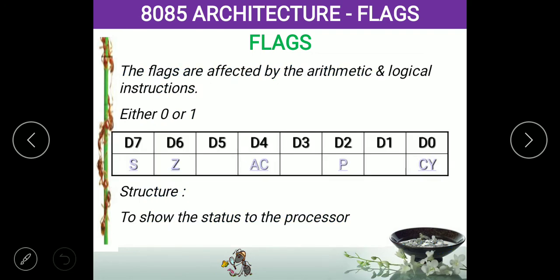The flag register is an 8-bit register — in maximum it can show the status of 8 activities. The status is mainly for the processor, and the processor knows what's happening based on the flag status. The flags in the 8085 are: S (sign flag), Z (zero flag), AC (auxiliary carry flag), P (parity flag), and CY (carry flag). The remaining elements are kept as dummy flags for future use.